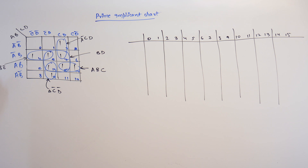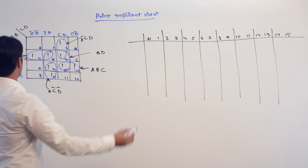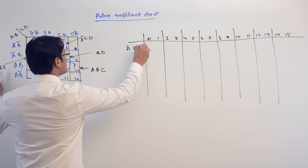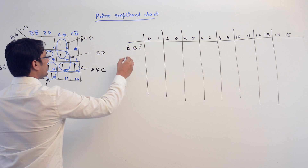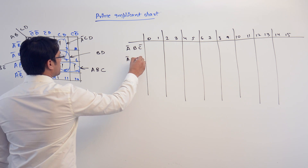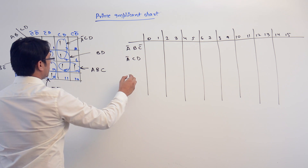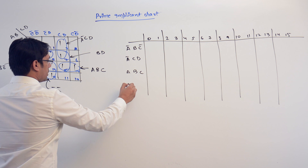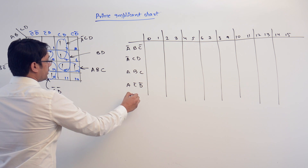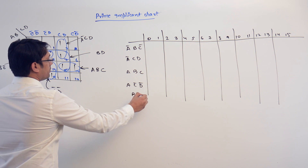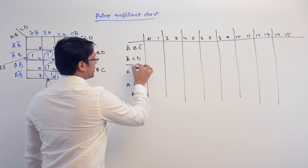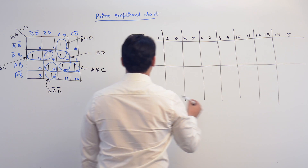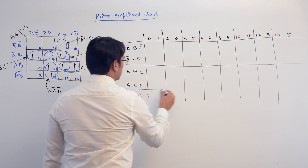And the subcubes which we have are: A complement, B, C complement; A complement, C, D; A, B, C; A, C complement, D complement; and B, D. So these are the subcubes which we have.